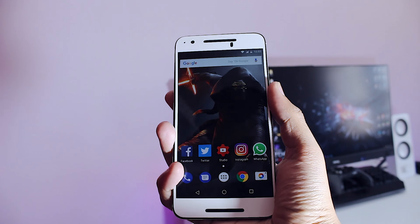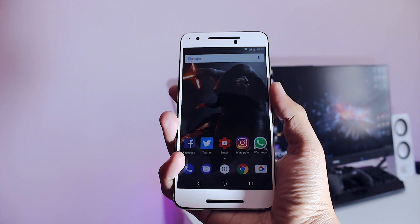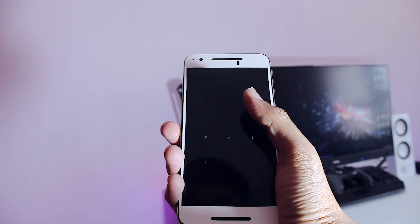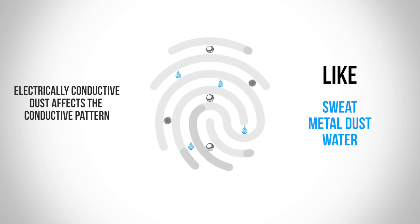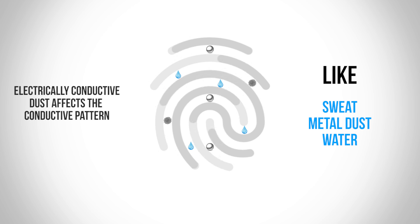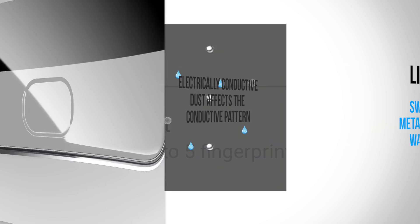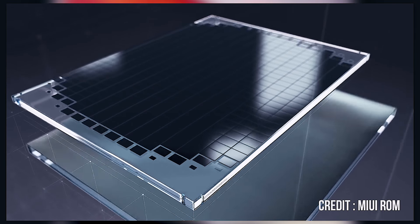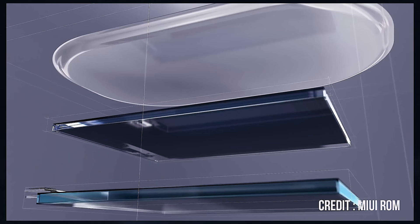But these capacitive fingerprint scanners are not completely flaw-free. They have some issues which affect the fingerprint scanning pattern, and that issue is nothing but electrical conductivity. If your fingerprint has an electrically conductive substance like sweat, water, or other conductive dust, then once you place your finger on the scanner, not only do the ridges conduct electricity but also the valleys conduct electricity, which affects the pattern of fingerprint scanning and authentication. So in order to overcome this, they are now working on a new fingerprint scanner that uses ultrasonic waves to scan and authenticate fingerprints.